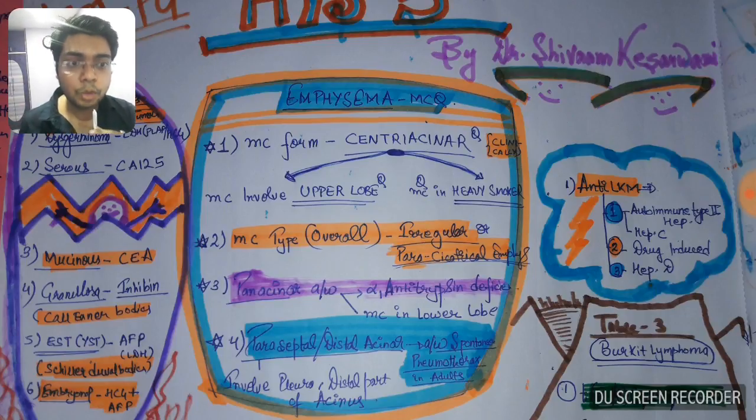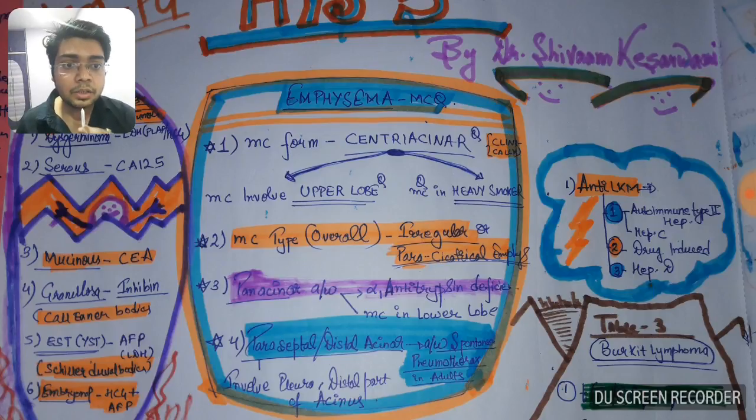Panacinar type of emphysema is associated with alpha-1 antitrypsin and is most commonly seen panacinar in the lower lobes.